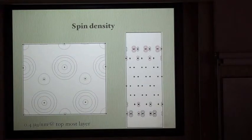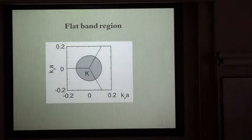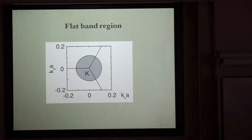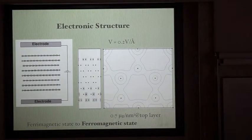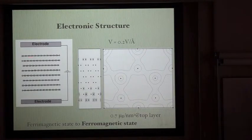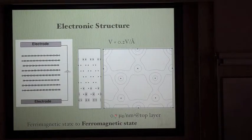Next is how the flat band region extends in the Brillouin zone. Due to the small interlayer electron hopping, the region is very small and forms an almost circular region. When we apply an electric field normal to the layers — under 0.2 V/Å — the ferrimagnetic state turns to a ferromagnetic state, with a calculated magnetic moment of 0.7 Bohr magneton per square nanometer.